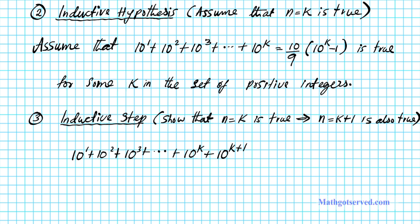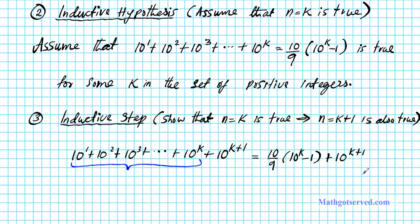This entire component of the expression is equal to what? Based on our inductive hypothesis, we assumed that this entire term equals 10 over 9 times 10 to the k minus 1. So that's equal to 10 over 9 times 10 to the k minus 1, and then we add the last term, plus 10 to the k plus 1. This is by our assumption in part 2.